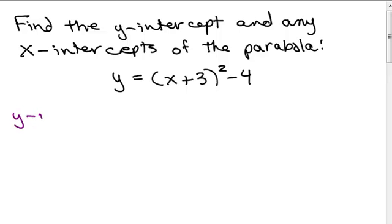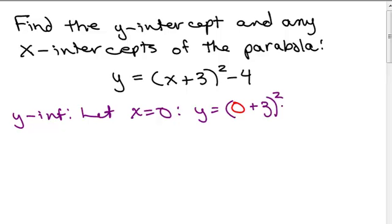For the y-intercept, it's always the same no matter what equation you have, whether we're looking at the equation of a parabola, of a line, of a circle, or any other object in the xy plane. We're going to let x equals 0. So we're going to take this equation and put in 0 for x. So we have y equals 0 plus 3 squared minus 4.